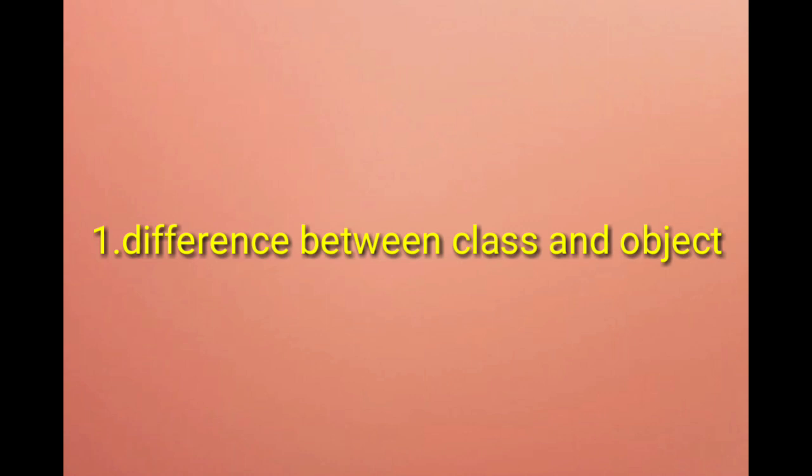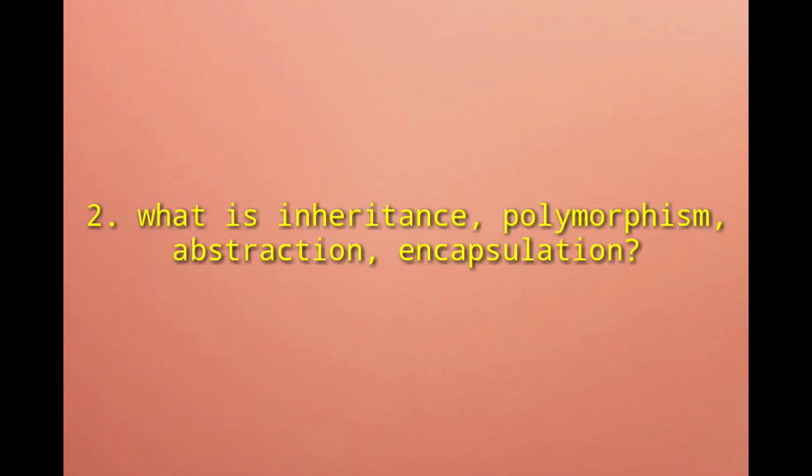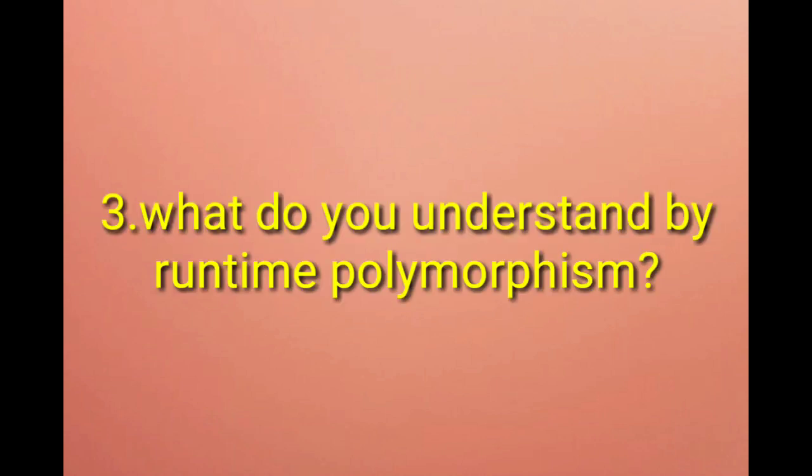Differences between class and object, what is inheritance, polymorphism, abstraction, encapsulation. What do you understand by runtime polymorphism?